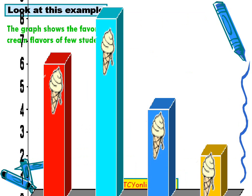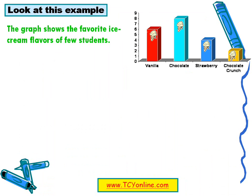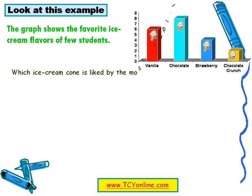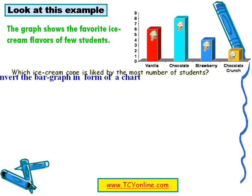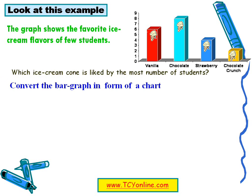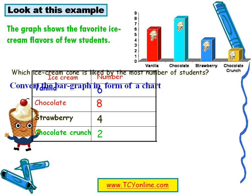Now let's see one more example. This graph shows the favorite ice cream flavor of a few students. The x-axis represents the different flavors of ice creams, while the y-axis represents the number of students. The question is: which ice cream flavor is liked by the most number of students? To find out, we will convert the bar graph into the form of a chart.